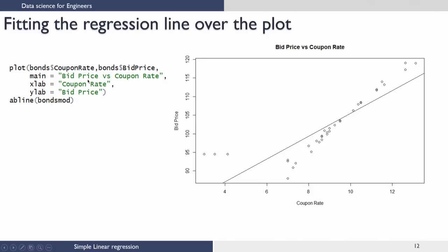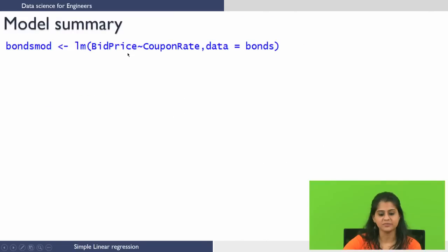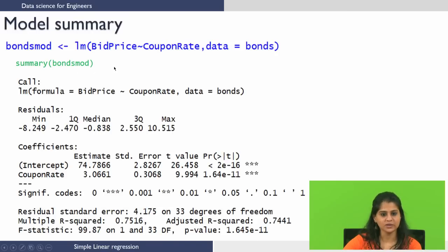Now let us take a look at the model summary. We run summary(bonds.mod) — the input to the summary function is the linear model. This is how it looks when you run the command in the console. We have four sections of output: call, residuals, coefficients, and some heuristics at the bottom.